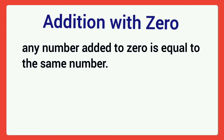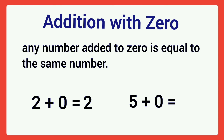Addition with zero. Any number added to zero is equal to the same number. For example, two plus zero is two. Next, five plus zero is equal to five.